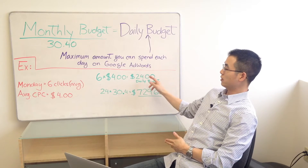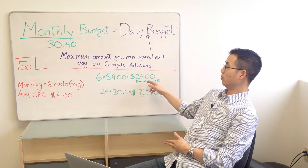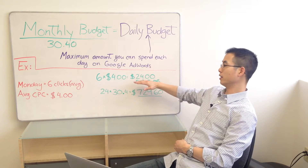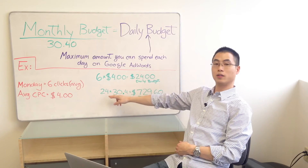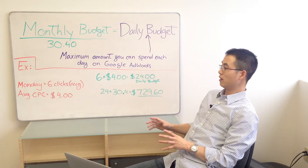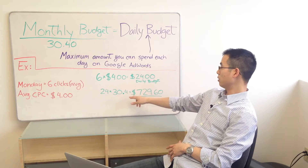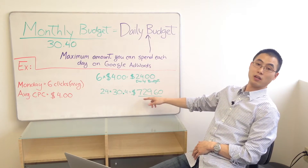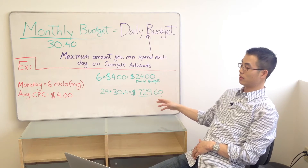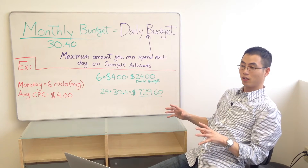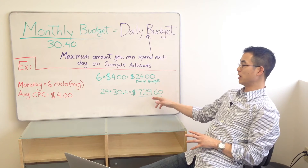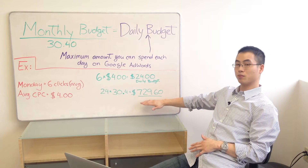So that's going to mean we need to make sure we have a budget sufficient to cover $24 every single Monday. We're going to take $24 and multiply it by 30.4, which is the average number of days in a month — that's the formula Google uses. 24 times 30.4 comes out to a monthly budget of $729.60. So if you want to make sure you capture all the traffic and all the opportunities in your market in a given month, you want to be willing to spend $729.60 or more.